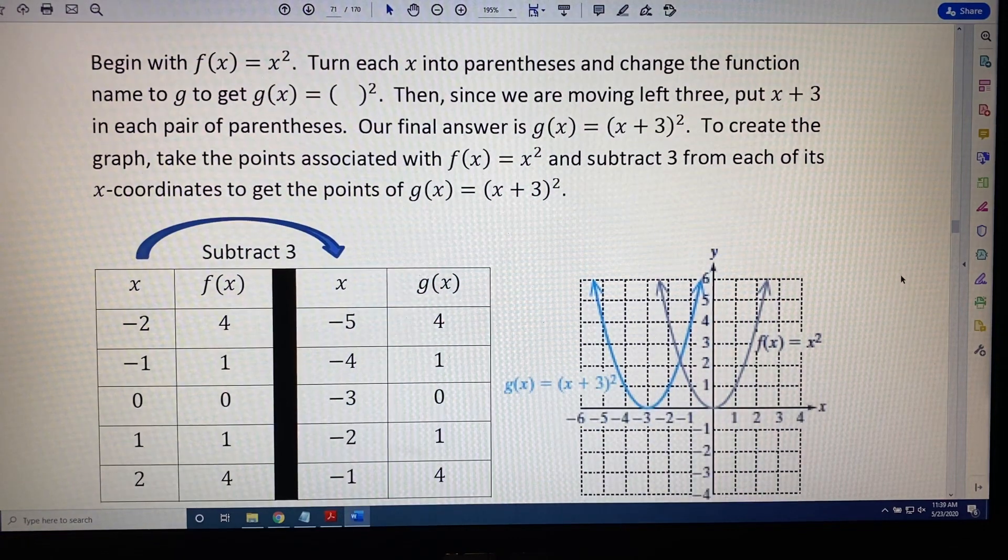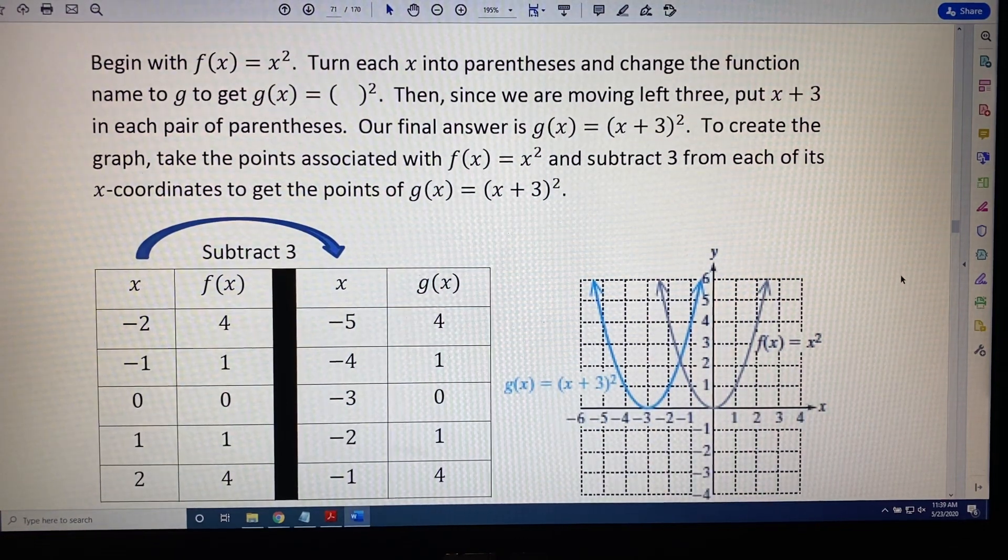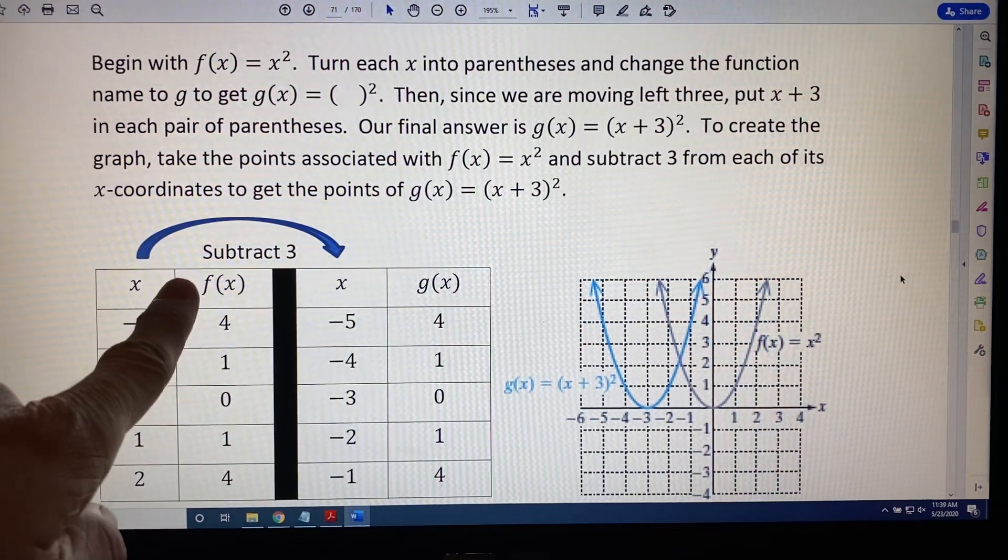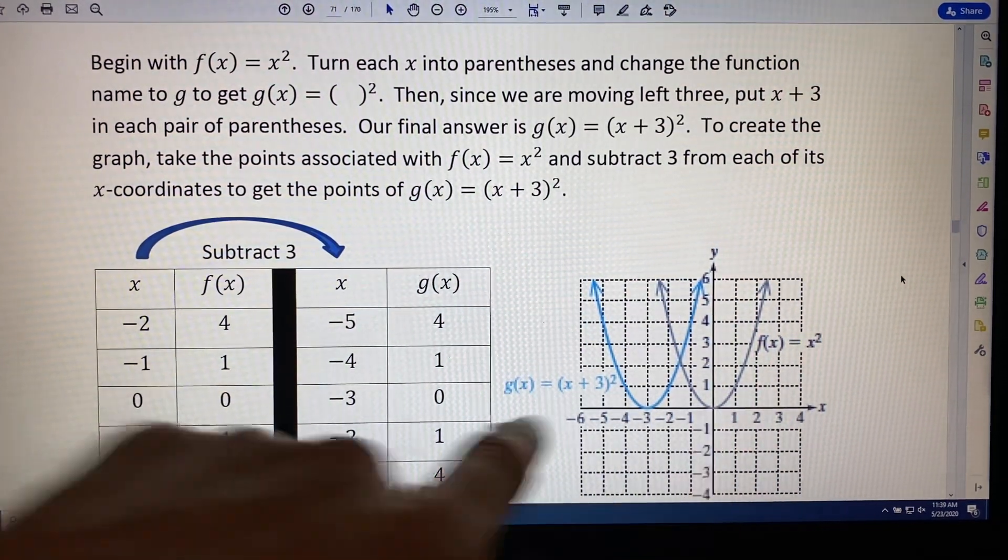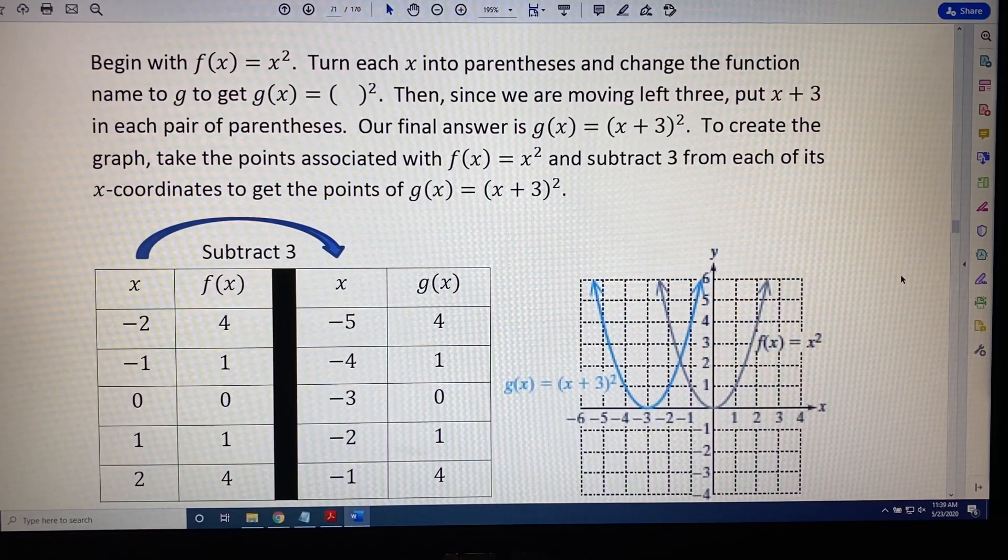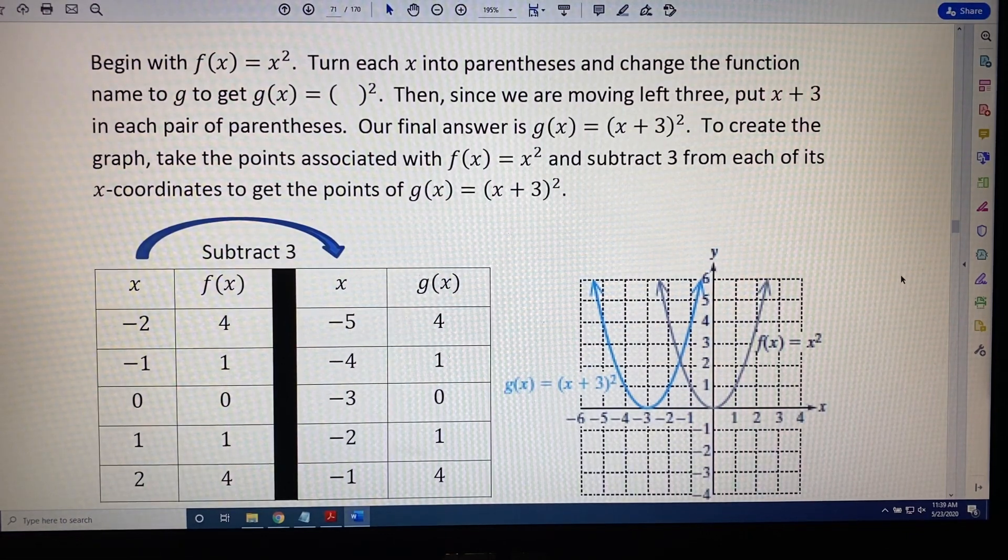Let's begin with f(x) = x², which is shown in this table of points here on the left and is shown in gray on this graph. According to the process described above, we should turn each x into parentheses.